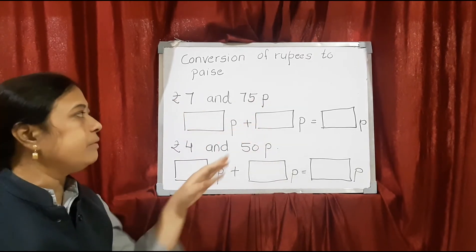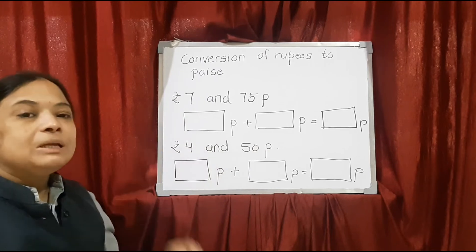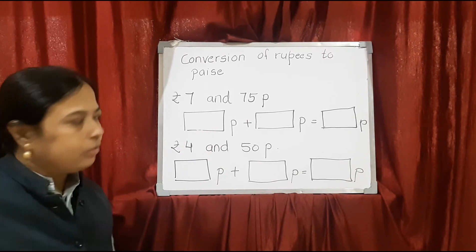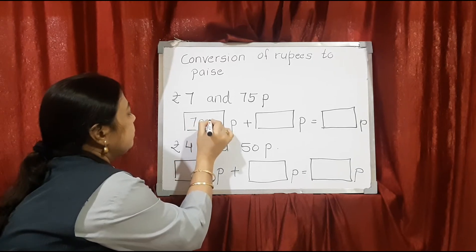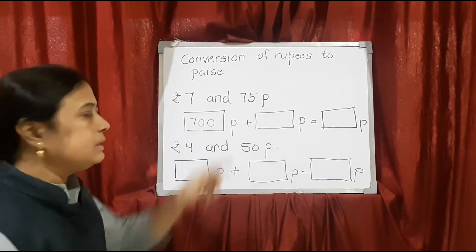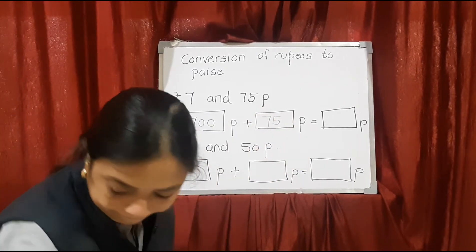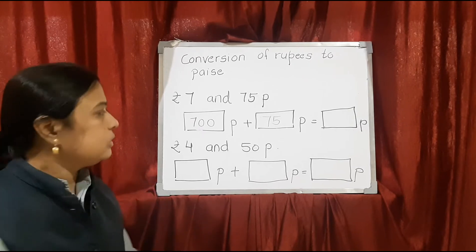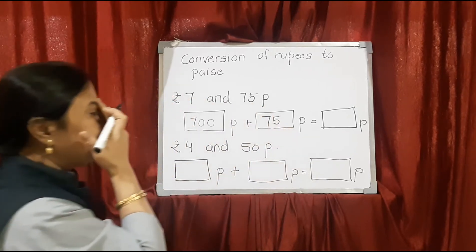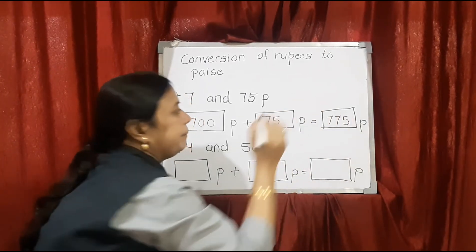But here, paise is already given, so no need to change that number — we will write it as it is. 7 rupees makes 700 paise. So here we write 700 paise. For 75 paise, as it is, we write 75. When we add both, 700 plus 75, the final answer will be 775 paise.